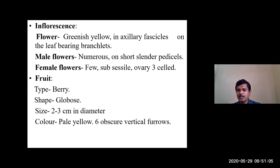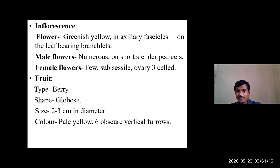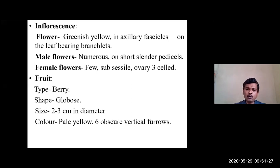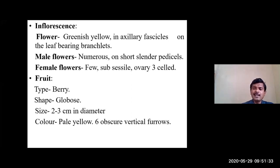As observed in the previous slides, there are numerous flowers, but only female flowers develop into fruits. Since female flowers are very few - hardly three, five, or maximum ten - the number of fruits produced equals the number of female flowers. Female flowers are few, sub-sessile, and the ovary has three cells.